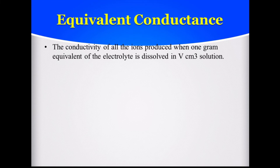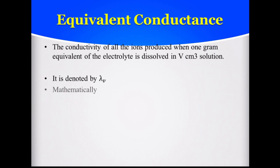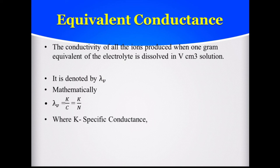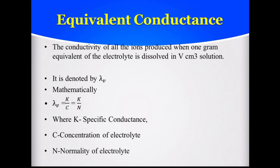Equivalence conductance: the conductivity of all the ions produced when 1 gram equivalent of the electrolyte is dissolved in V cm³ of solution. It is denoted by λV. Mathematically, λV = K/C = K/N. When we determine the conductance of a normal solution, it is called equivalence conductance, where K is specific conductance, C is the concentration of electrolyte, and N is the normality of electrolyte.